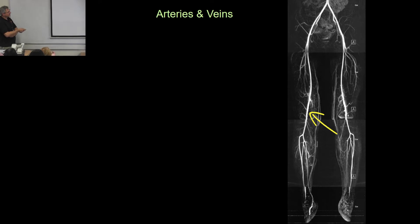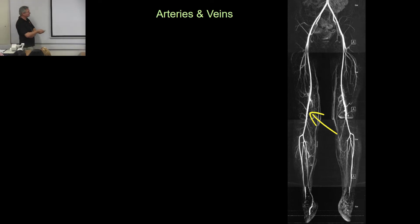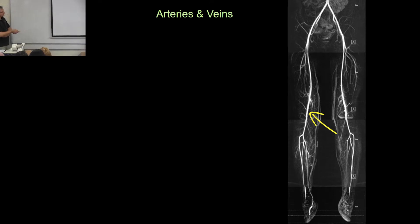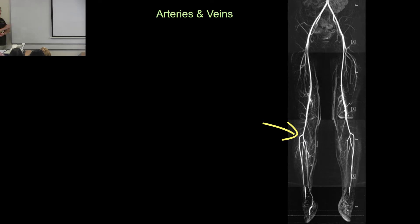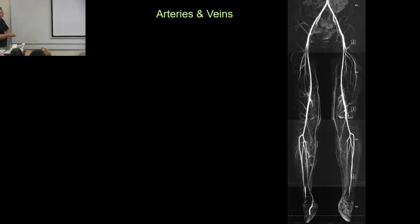Once the superficial femoral artery is posterior to the knee, it changes name again and becomes the popliteal artery. The popliteal artery then stops at the trifurcation — where it splits into three. At the trifurcation you have the anterior tibial, posterior tibial, and fibular arteries. After that it starts to get less clinically important.